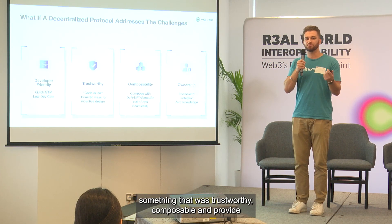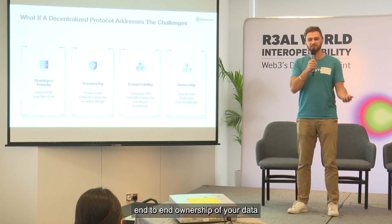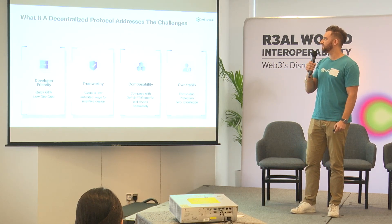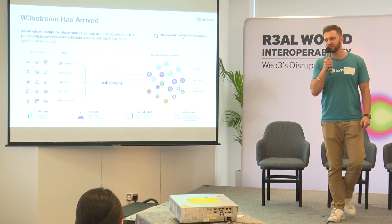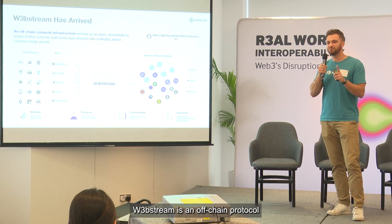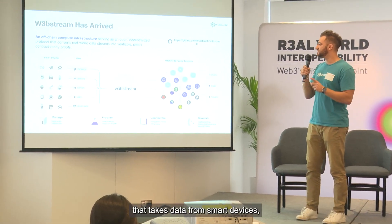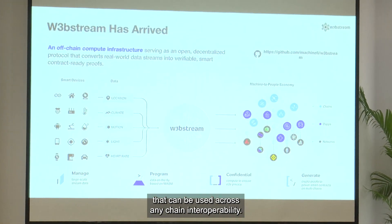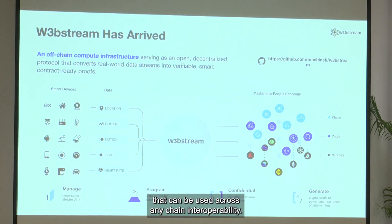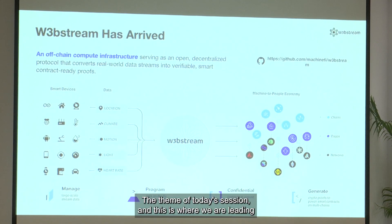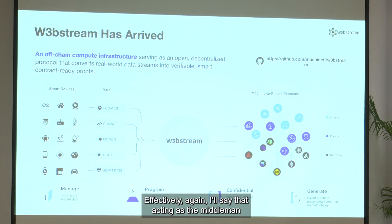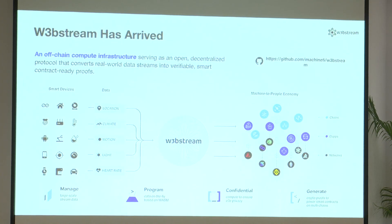What if there was a decentralized protocol that addressed those challenges — something developer-friendly, trustworthy, composable, and providing end-to-end data ownership using zero-knowledge proofs? Enter Web Stream. Web Stream is an off-chain protocol that takes data from smart devices, runs computation, and generates proofs that can be used across any chain — interoperability being the theme of today's session. It acts as the middleware between smart device data and any chain.